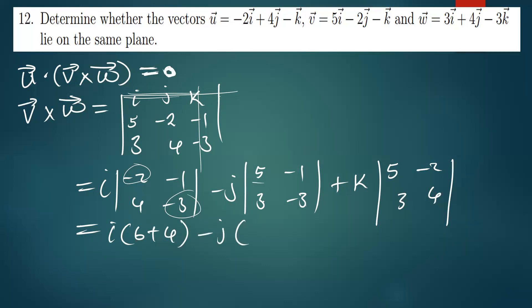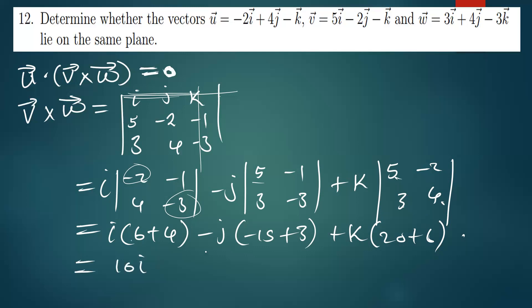That gives us positive 10 for i. Then we have negative j times (5)(negative 3) minus (negative 1)(3), which is negative 15 minus negative 3, giving negative 12, so we get positive 12j. For k we have (5)(4) minus (negative 2)(3), which is 20 plus 6, giving 26k. So v cross w equals 10i + 12j + 26k.